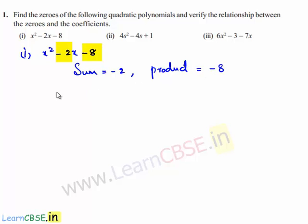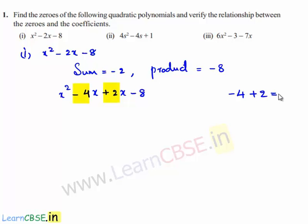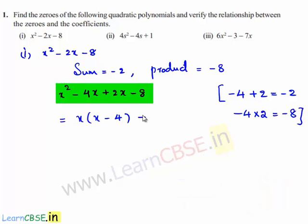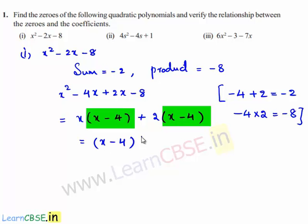By the method of splitting, we can write the given quadratic polynomial as x² minus 4x plus 2x minus 8. Here, minus 4 plus 2 gives sum minus 2, and the product of minus 4 and 2 is minus 8. Taking x as common from the first two terms, we get x(x minus 4) plus 2(x minus 4), which factors as (x minus 4)(x plus 2).